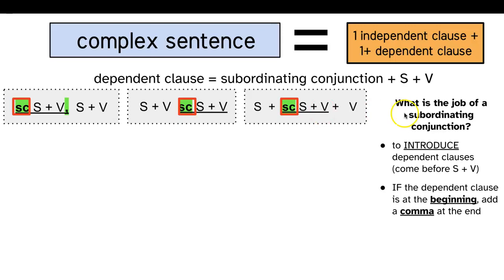When we think of the job of a subordinating conjunction, it does two things: it introduces a dependent clause, meaning it comes before a subject and verb. And we know that if the dependent clause is at the beginning, we have to add a comma at the end of that clause — we have to figure out where the clause ends and add a comma there.